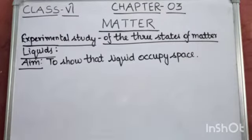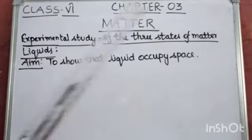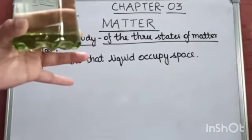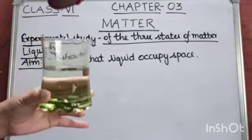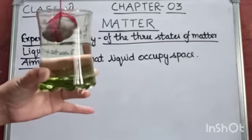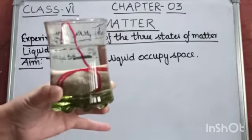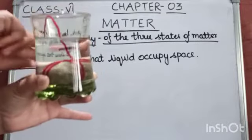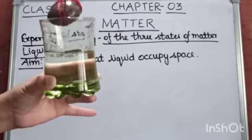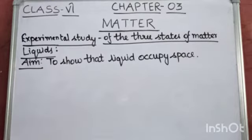Now through an experiment, I am going to show you that liquids also occupy space. Using the same experiment — we have a glass of water marked to a level here — if I put a solid inside this tumbler, the water level rises up, showing that water is also taking up space. And if I remove the liquid, the water level comes back to its original position. This experiment shows that liquid occupies space.